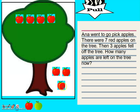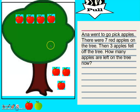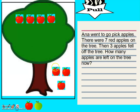How many apples are left on the tree now? One, two, three, four. We just subtracted. We had seven total apples on the tree. Three fell off. And now we're left with four.